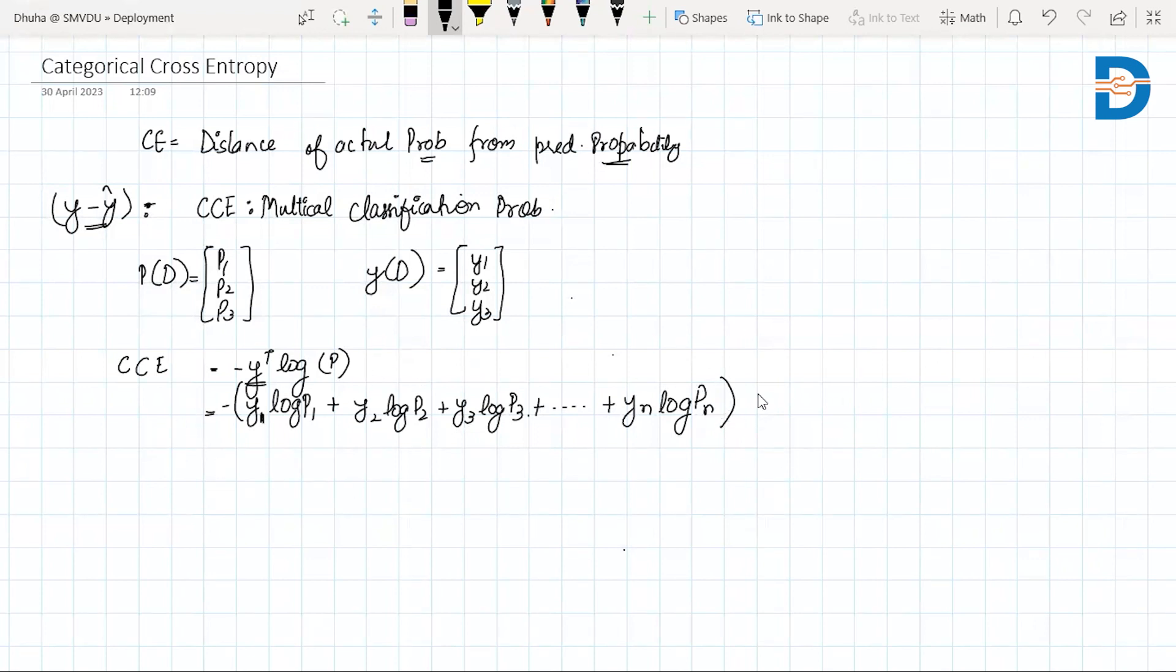This is the categorical cross entropy of only one point. But since we need to find a loss function or cost function that combines all these points, we do minus one by n, where n is the total number of data points. Then we do the summation of y log of p. This is how you determine your categorical cross entropy.